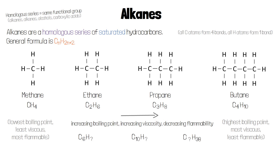We can use the general formula for alkanes to work out how many hydrogen atoms are in an alkane with a given number of carbon atoms, and vice versa. If an alkane has six carbon atoms, N equals 6, so 2N equals 12, and 2N+2 is 12+2, which is 14. That means an alkane with six carbon atoms will have 14 hydrogen atoms, and its formula will be C6H14.